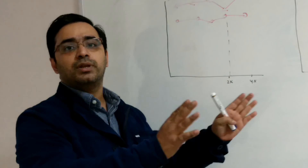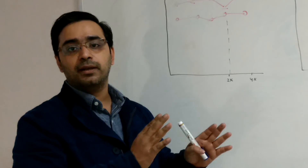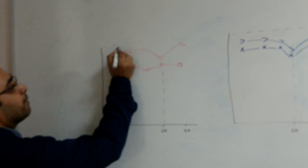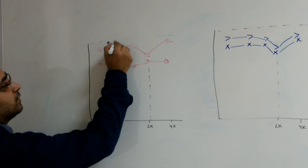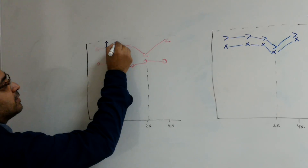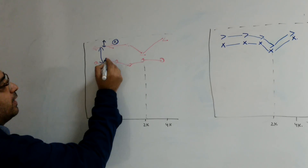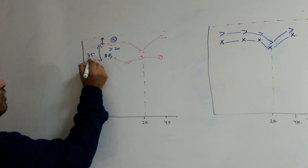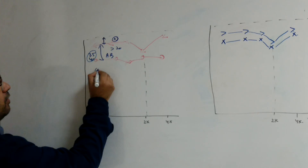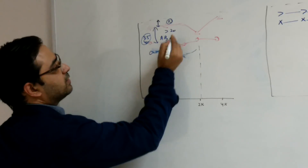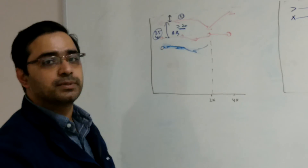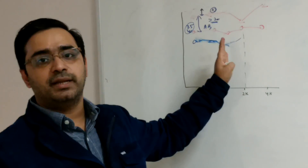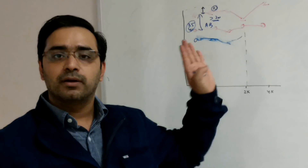We will concentrate only on stapedial otosclerosis. Stapedial otosclerosis causes conductive deafness. This is a graph showing there is no dip in bone conduction — bone conduction is normal — but there is a significant air-bone (AB) gap. This can be anything more than 20 dB, say 35 or 40. The key feature is that the AB gap should be more than 20 decibels, which indicates conductive deafness.